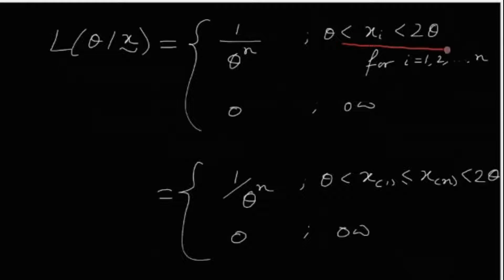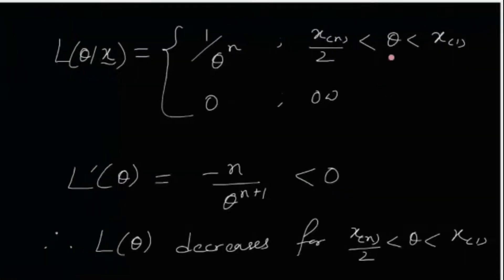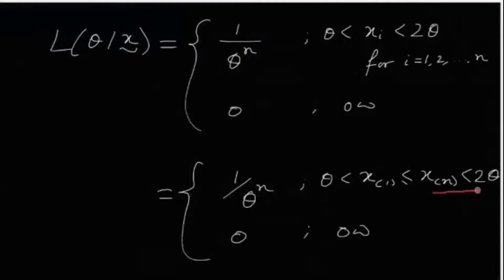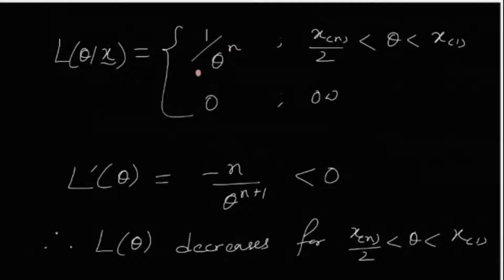This condition can be written as θ < X_(1) ≤ X_(n) < 2θ, where X_(1) denotes the sample minimum and X_(n) the sample maximum. Re-arranging: from the left inequality we get θ < X_(1), and from the right we get θ > X_(n)/2. Therefore, L(θ | x) = (1/θ)^n provided θ ∈ (X_(n)/2, X_(1)), and 0 otherwise.